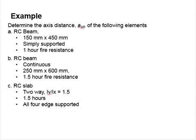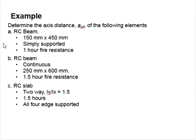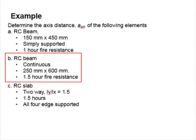Let us try some examples to determine the existence of reinforced concrete elements. We have three elements here. The first one is a simply supported beam with the size of 150 x 450 and one hour fire resistance. The second one is a continuous beam. The size is 250 x 600, meant to resist fire for one and a half hours.